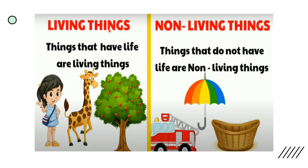These are the living things and non-living things. Living things are the things that have life — for example, the plant, animals, and a person. They have life. The plants grow, the animals grow, the person grows. They reproduce. And they breathe air — the animals, the plants, and the person breathe air.